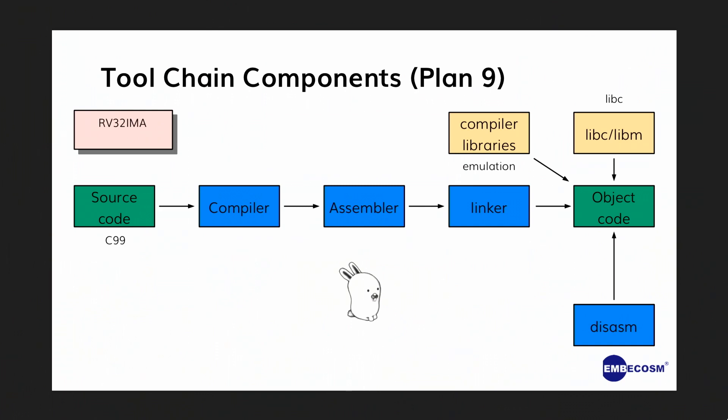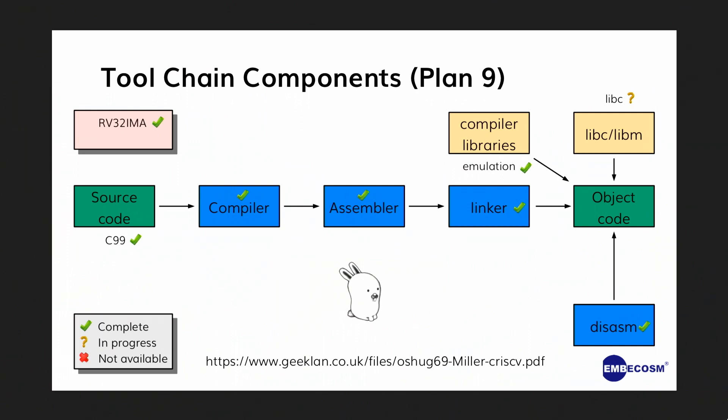How many of you know about Plan 9? It's an experimental operating system that's been around for a long time. It does have a compiler — a very small compiler, it only does C99. Almost all the bits exist except a libc library. Richard Miller's work brought this up in four weeks. It's a very simple compiler with no optimization, just one language, but you can bring it up very, very quickly. So if you want a tiny little C compiler, it's there.